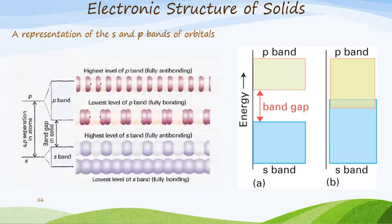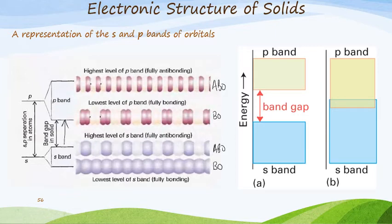This is another representation using specifically the S and P bands of different orbitals. We have S atomic orbitals, and with some separation in the atoms we have an S band with bonding molecular orbitals here and antibonding orbitals above. We find there's a gap between the orbitals — that is the band gap in the solid.